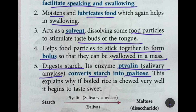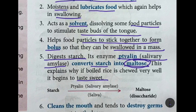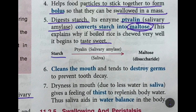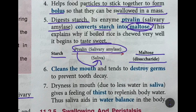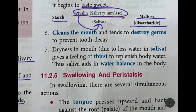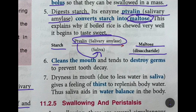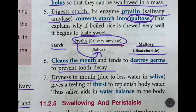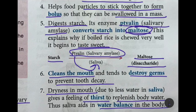Ptyalin converts starch into maltose. This explains why if you chew boiled rice very well and keep chewing, it will start tasting sweet — because the starch is being converted into the sugar maltose, which is a disaccharide with two molecules. So starch in the mouth, with the help of the enzyme ptyalin or salivary amylase found in saliva, changes into maltose. Saliva also cleans the mouth, destroys germs to help prevent tooth decay, and helps maintain water balance in the body.